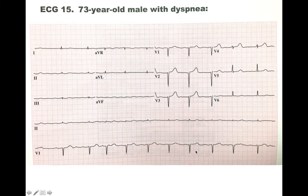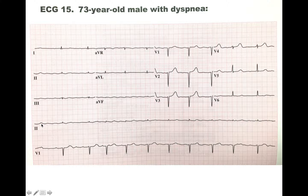Hi, this is Julia, third-year medical student. Let's take a look at this EKG. The first thing I notice is we will be counting the rate. Because it's very irregular, we are going to be using the rhythm strip rule. This is a 10-second rhythm strip, so if we just count the number of peaks: 1, 2, 3, 4, 5, 6, 7, 8, 9, 10, 11.